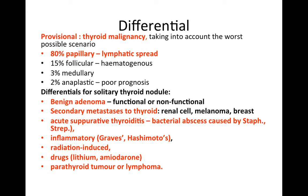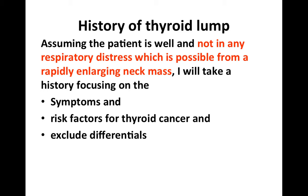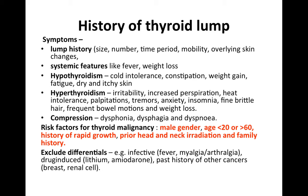In terms of history, first assume the patient is well and not in any respiratory distress, which is possible from a rapidly enlarging neck mass. Take a history focusing on symptoms, risk factors for thyroid cancer, and to exclude differentials. For the lump, ask about its size, number, the time period over which it grew, mobility, and any overlying skin changes. Also ask for systemic features suggestive of neoplastic causes such as fever and weight loss.